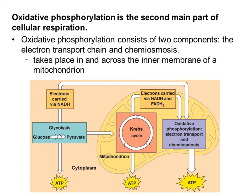Now we're going to look at oxidative phosphorylation, which consists of two components we've already seen in photosynthesis: the electron transport chain (ETC) and chemiosmosis. Both of these take place in and across the inner membrane of the mitochondrion, and this is what's going to produce the most ATP out of the whole process. It's also important to note that what glycolysis and the Krebs cycle have mostly been doing is producing these high-energy electron carriers which are shuttling electrons over to this last step.